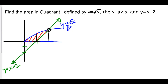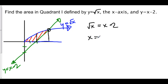First, we need to figure out where these two functions intersect. To do that, I'm going to set the square root of x equal to x minus 2. To solve this, we square both sides, so we have x is equal to x squared minus 4x plus 4, because when we square one side, we square the entire side.